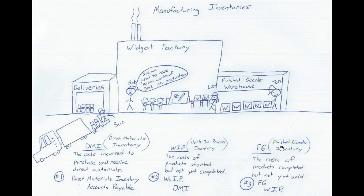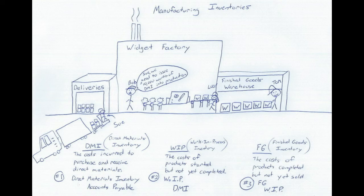and then finally we have finished goods inventory. We have a manufacturing facility with three components. There's the delivery area where trucks come in and deliver our direct materials inventory. Direct materials inventory is the cost incurred to purchase and receive direct materials. So when we buy our direct materials — in this case steel for our widgets — as it comes in the delivery bay, it directly goes into DMI. The journal entry is we debit DMI and credit accounts payable. Whatever is sitting in the delivery area before it gets into production is held in DMI.